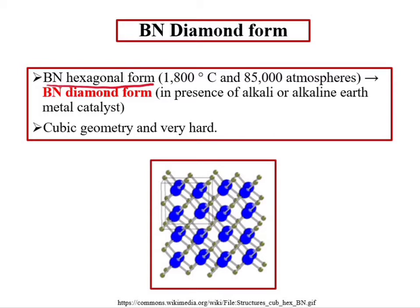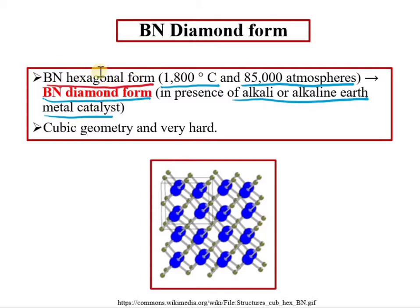If hexagonal BN is subjected to high temperature of about 1800 degrees centigrade and 85,000 atmospheres of pressure, it transforms into a three-dimensional diamond form called BN diamond form. This cubic form is very hard with 3D geometry. The hexagonal form has a layered structure, while the diamond form has a 3D cubic structure — these are the two forms of covalent nitride boron nitride.